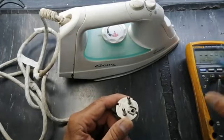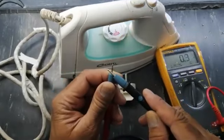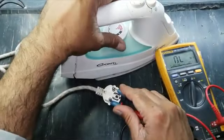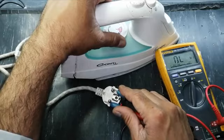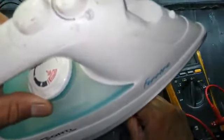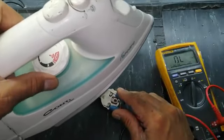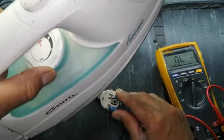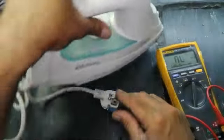Take multimeter, set it to ohms. Connect both leads so that it is verified that our multimeter is functional. Connect both leads to both pins and rotate the thermostat. We listen the click sound but there is no indication on the multimeter. So that means we have some issue with the thermostat.